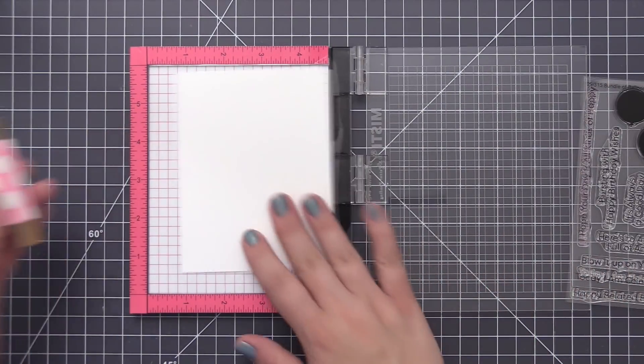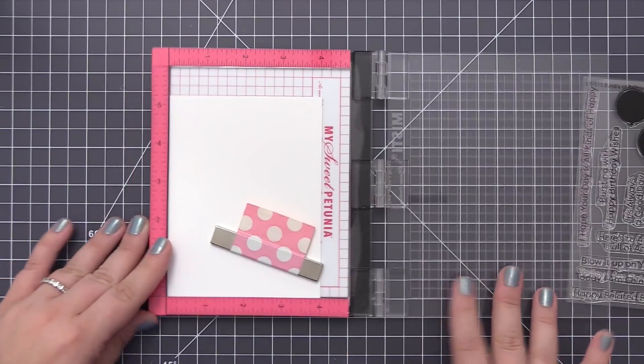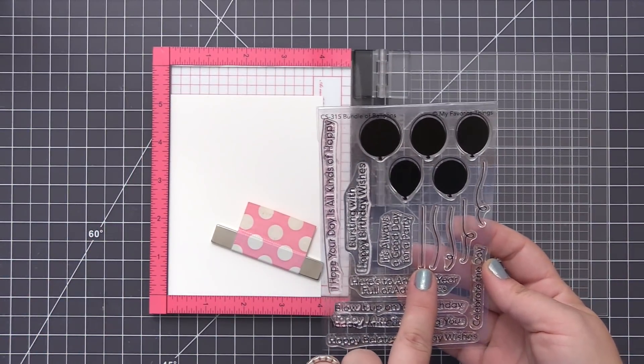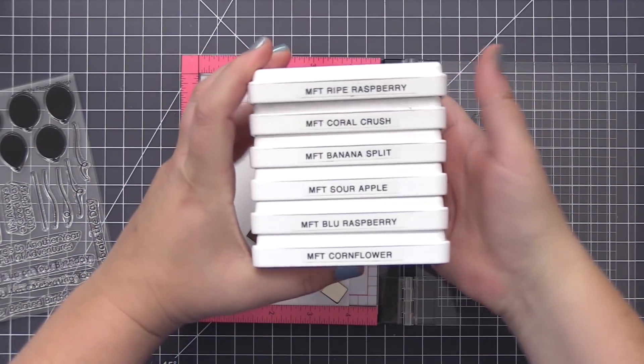I'm going to use my Misti to do my stamping. Since they are solid stamps, I like to usually do a double stamp of each one just to get a really nice solid impression. I'm going to do all of the stamping of the balloons first and then we're going to add the balloon string separately.